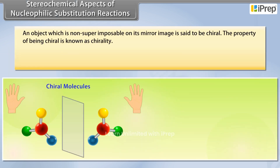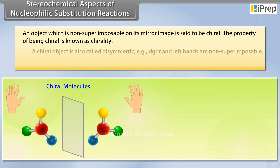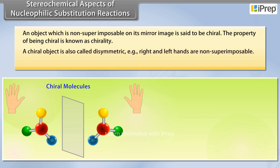An object which is non-superimposable on its mirror image is said to be chiral. The property of being chiral is known as chirality. A chiral object is also called Dysymmetric. For example, right and left hands are non-superimposable.